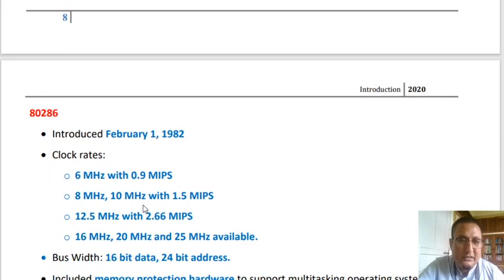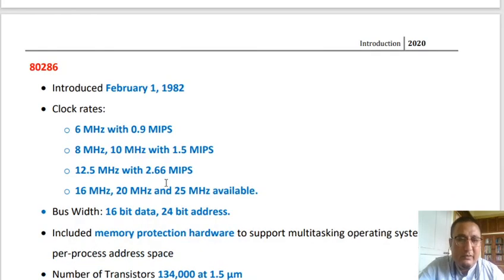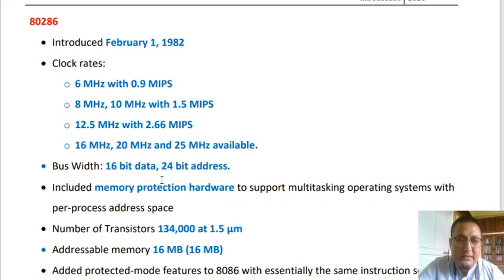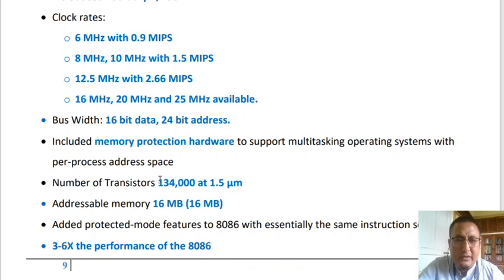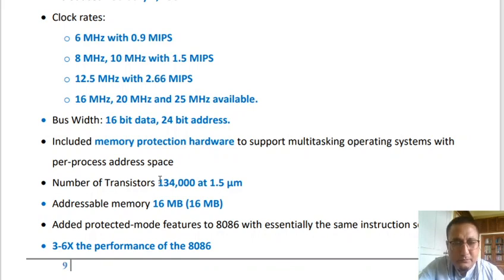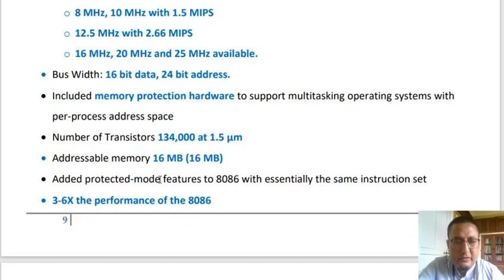The next 16-bit microprocessor is the Intel 80286, introduced on February 1, 1982, in multiple versions: 6 MHz with 0.9 MIPS, 8 and 10 MHz with 1.5 MIPS, 12.5 MHz with 2.6 MIPS, and 16, 20, and 25 MHz versions as well. The bus width was 16-bit for data and 24-bit for address due to greater addressable memory. It included memory protection hardware to support multitasking operating systems, had around 134,000 transistors at 1.5 micrometers, addressable memory of 16 MB, and 3 to 6 times the performance of the 8086.